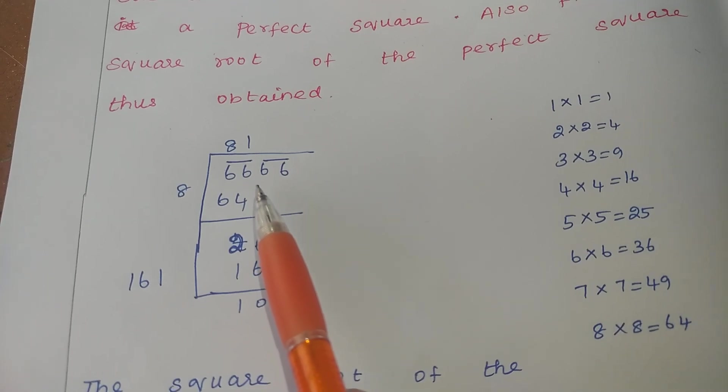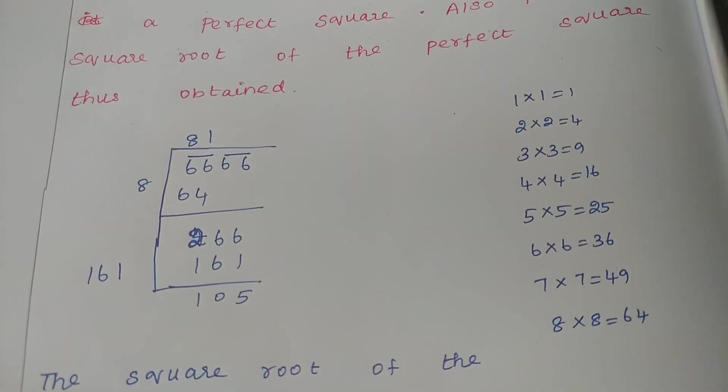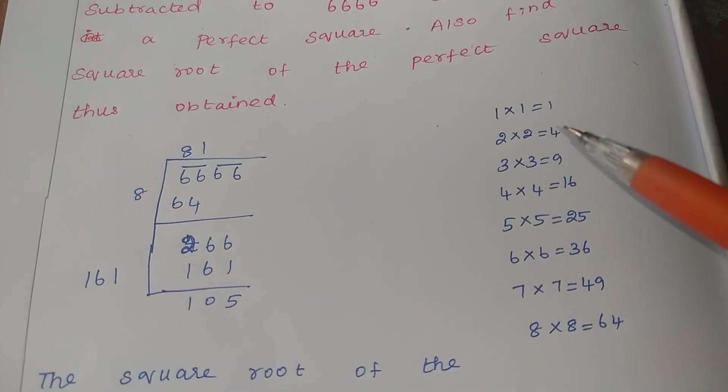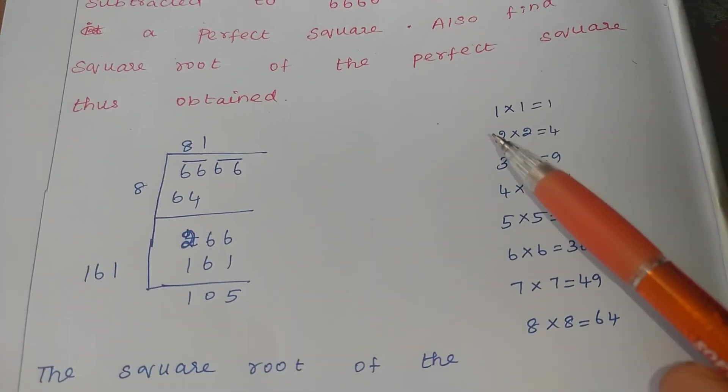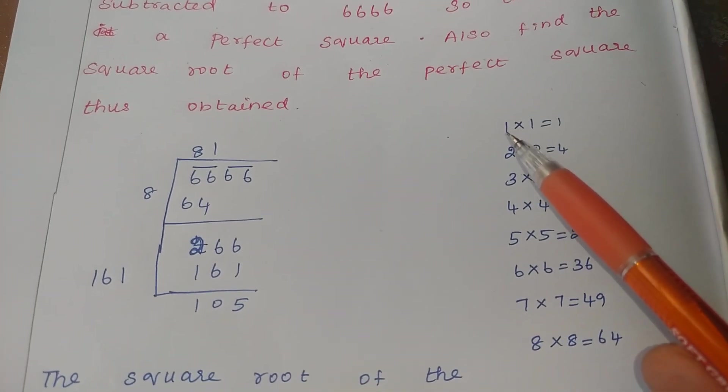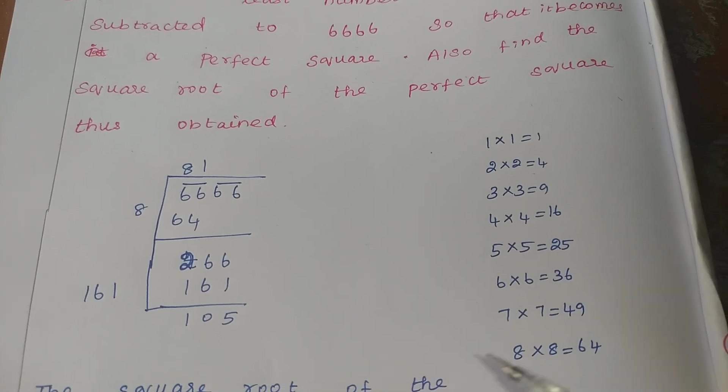First we are going to take 66. See here, the square numbers only we are going to use for this sum. Not other values. So what value you are putting? The same value you want to put here. So if you want to take the square values means 1 into 1, 2 into 2, 3 into 3.